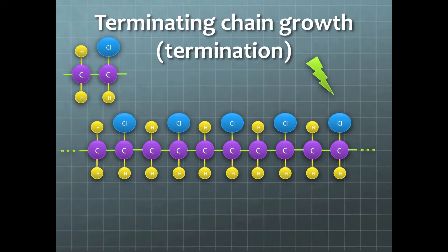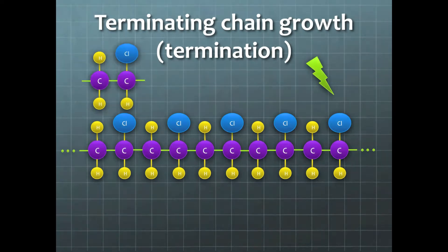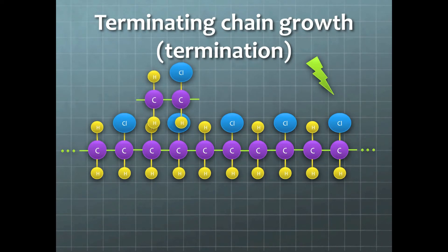The last stage is called termination. This is when the chain growth stops and this can be done with two factors. The first one is when we stop adding ethylene to the propagation, or when we lower the temperatures and pressures significantly.